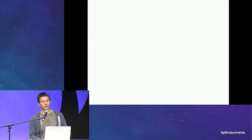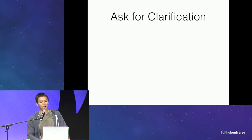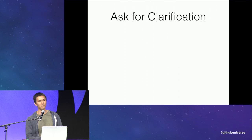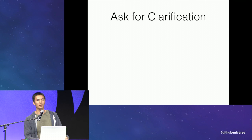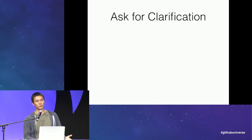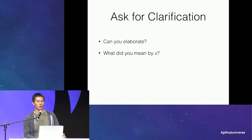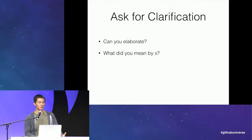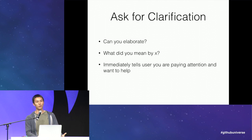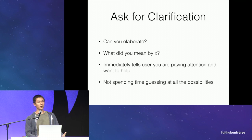There are a lot of things you can do to help, but what works best for me is simply to ask for clarification. A lot of time is spent guessing what the user is asking, and you end up answering three variants of a question instead of just one. If you're not clear, just ask: 'Can you elaborate?' or 'What did you mean by X?' This has the great benefit of immediately telling the user that you're paying attention and want to help — and people respond really well to this.